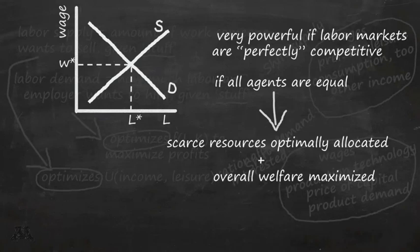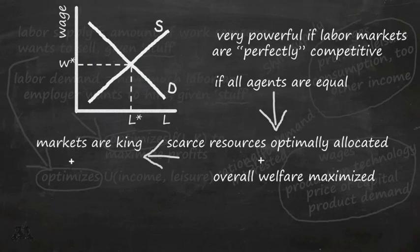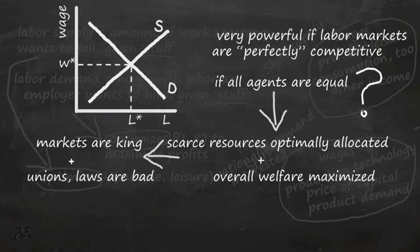So in mainstream economic thought, in the neo-market liberal ideology, markets are king. And things that are seen as interfering with markets, things that are seen as distorting markets, like labor unions or government regulations, those are seen as bad. Now, whether agents actually are equal is a question we'll come back to in the next video.